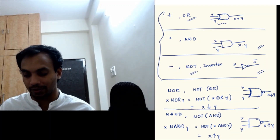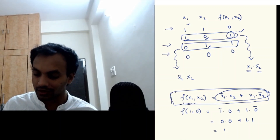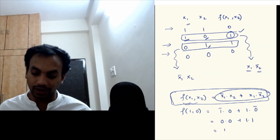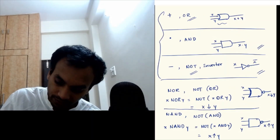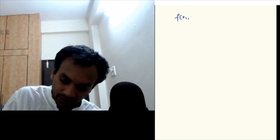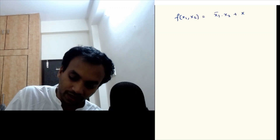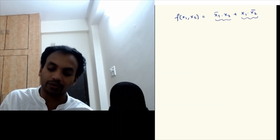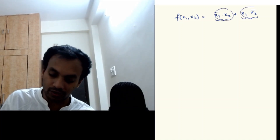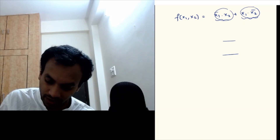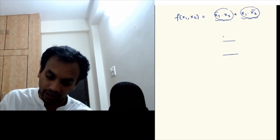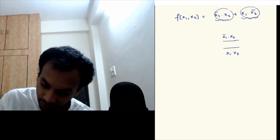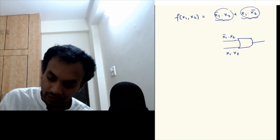Let's look at an example where we write a function in terms of gates. Take the function f(x1, x2) = x1 bar times x2 plus x1 times x2 bar, which we already saw before. To write this in terms of Boolean gates: the last operation is addition of two terms, so I take x1 bar times x2 and x1 times x2 bar as two inputs and feed them into an OR gate, since there is a plus there. That gives f(x1, x2) as the output.